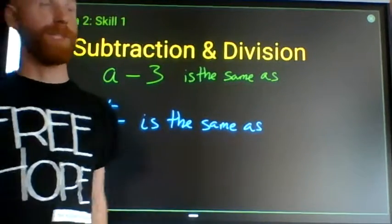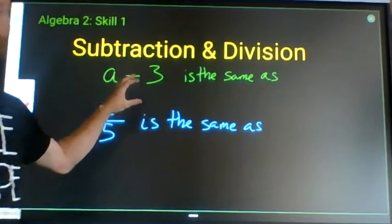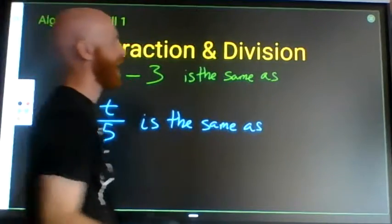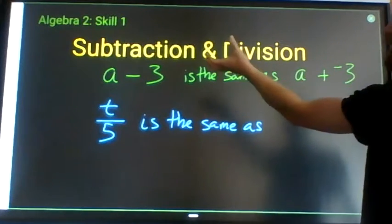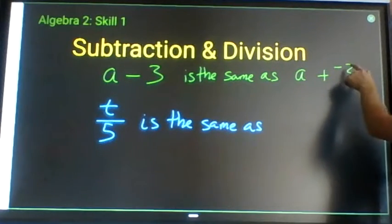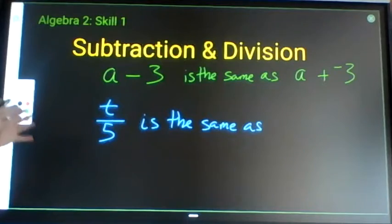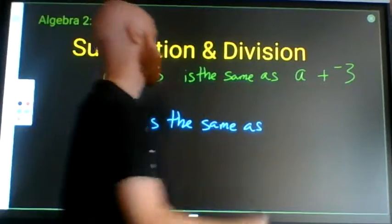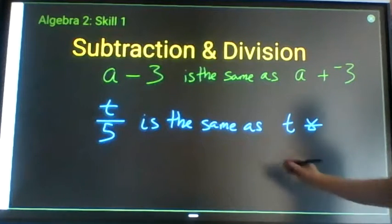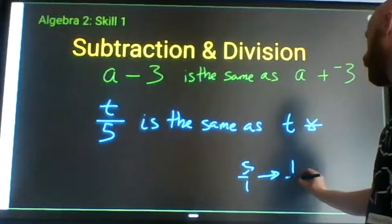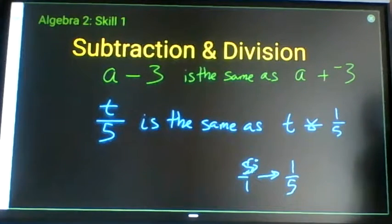There are ways to work around subtraction and division not being commutative or associative using their definitions. Subtraction is actually the same as adding the opposite, so I can change a subtraction symbol into an addition symbol if I switch the sign of what follows it. Similarly, division is the same as multiplying by a reciprocal: t divided by 5 is the same as t times 1/5.